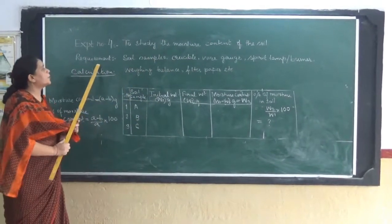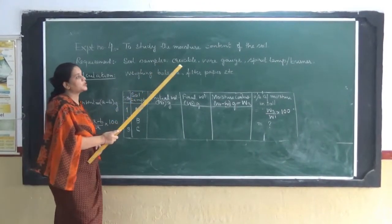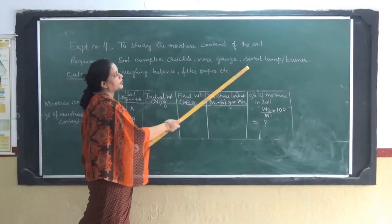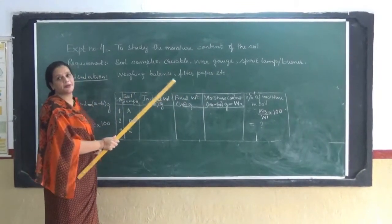For this experiment we require samples of soil, crucible, wire rod, spirit lamp or burner, weighing balance and filter paper.